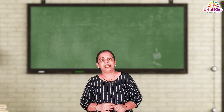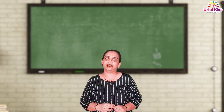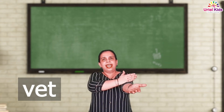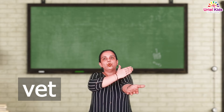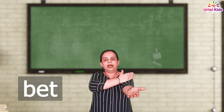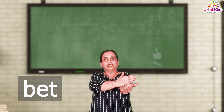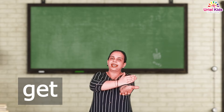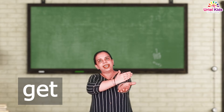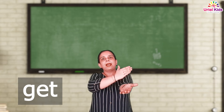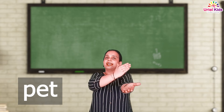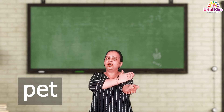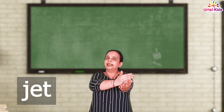And the next group is the E-T letter words. Shall we start? We do the chopping method now. Okay. V, E, T — Vet. G, E, T — Get. P, E, T — Pet. J, E, T — Jet. Wow, well done!